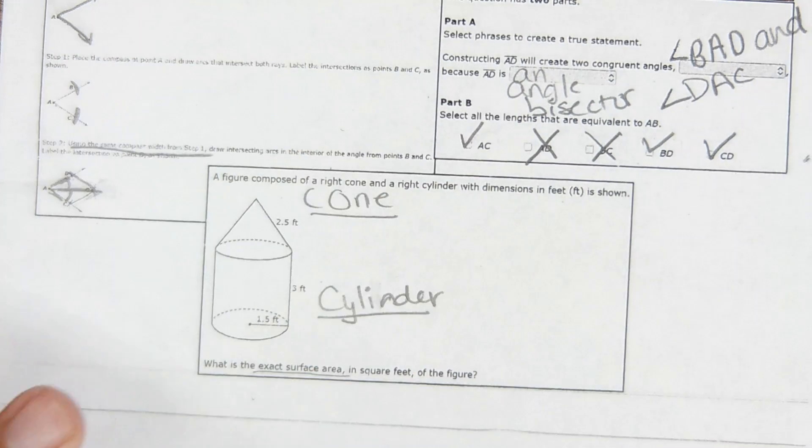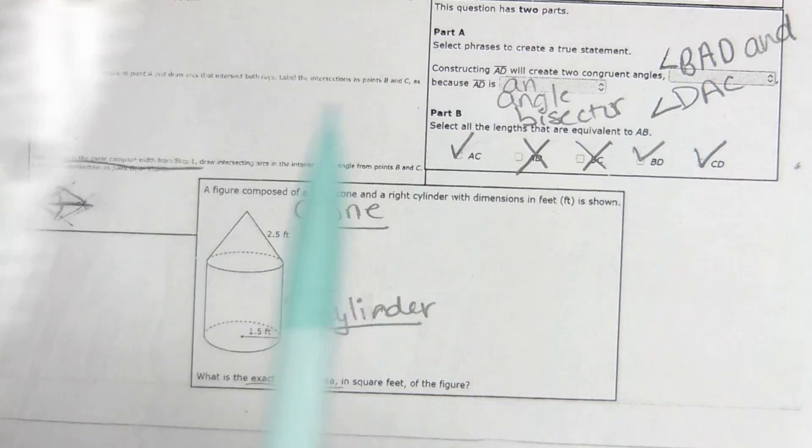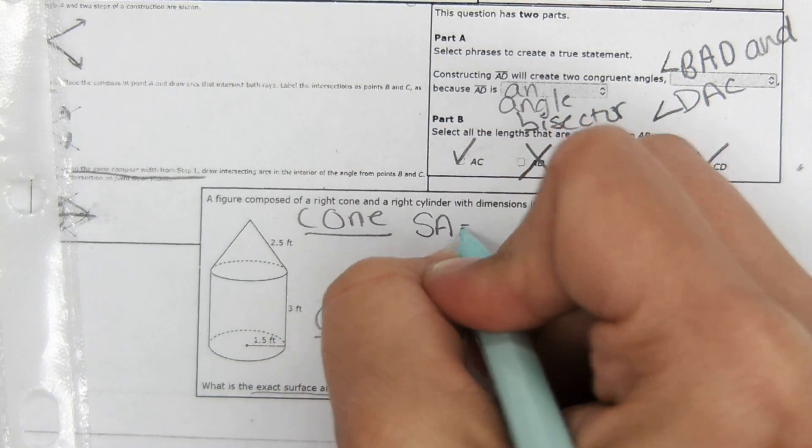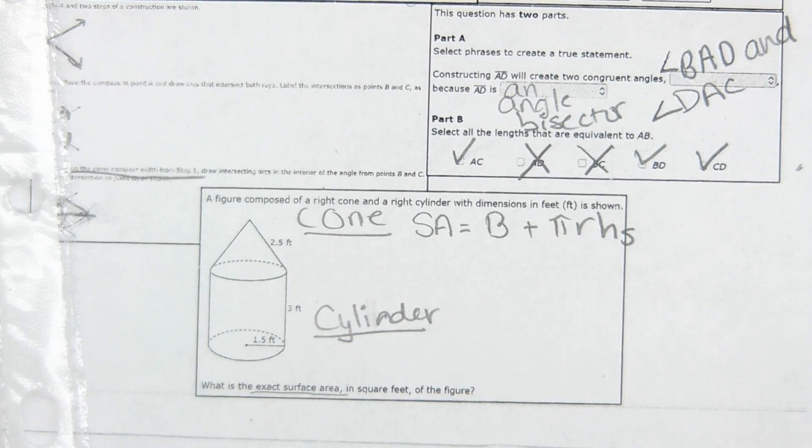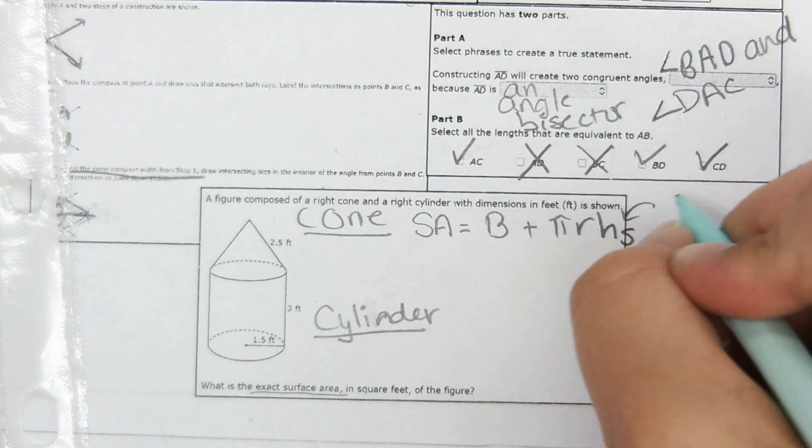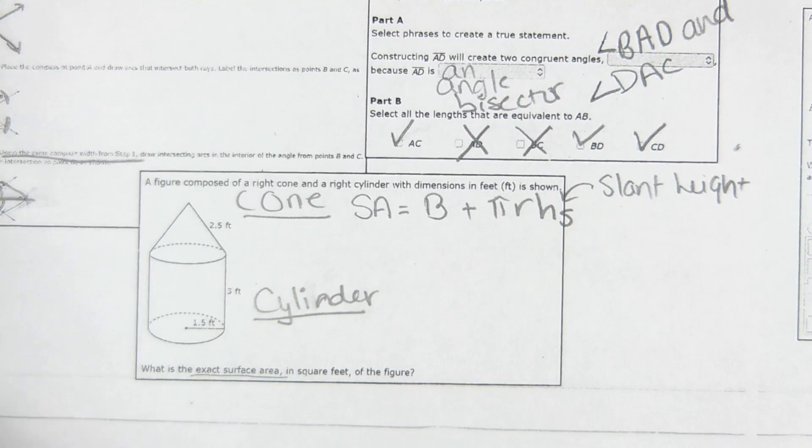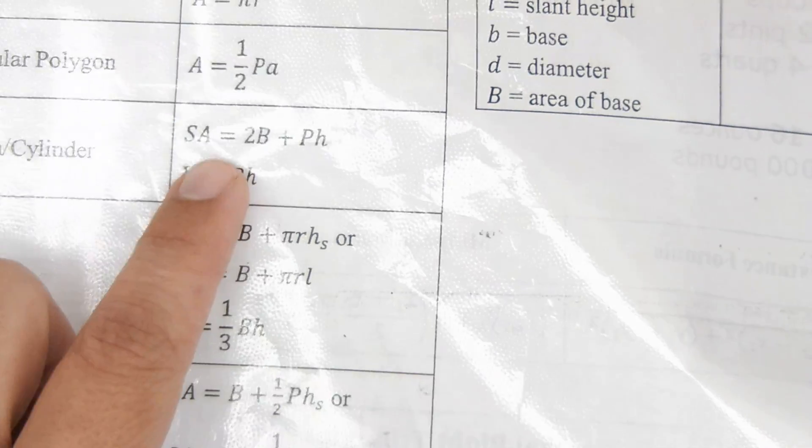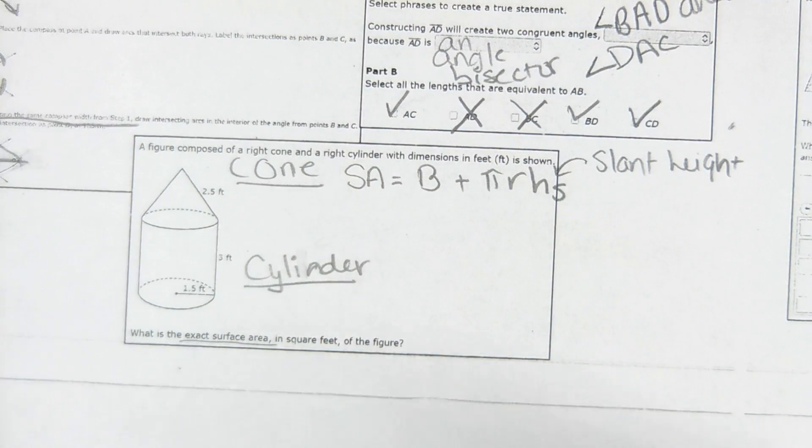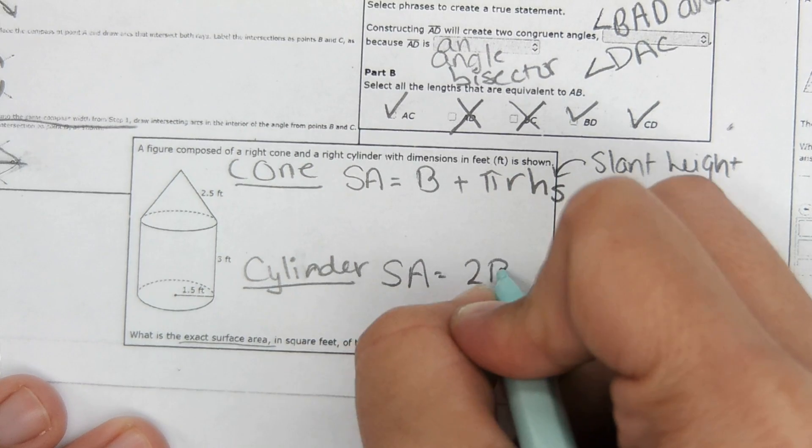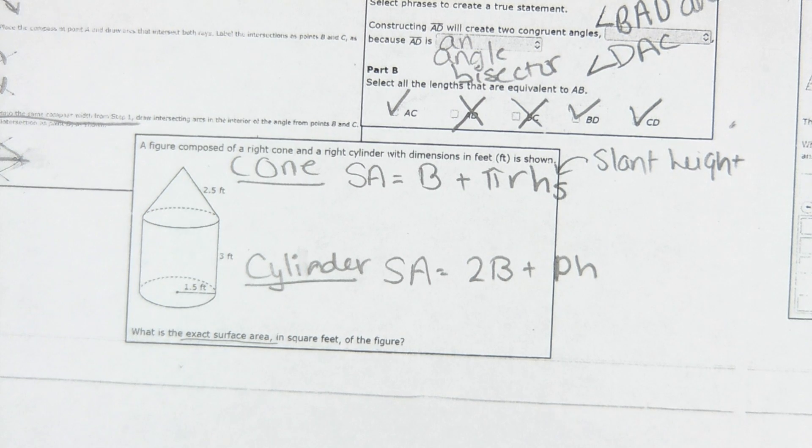Okay. So for surface area, I'd be looking at my reference sheet and surface area of a cone right here. I'm just going to copy this equation onto my paper. So the surface area of the cone is area of the base plus pi R H S. And H with this subscript S is slant height. And then surface area of the cylinder, right here, surface area equals 2 times the area of the base plus perimeter times height. So surface area of the cylinder, 2 times the area of the base plus perimeter times height.